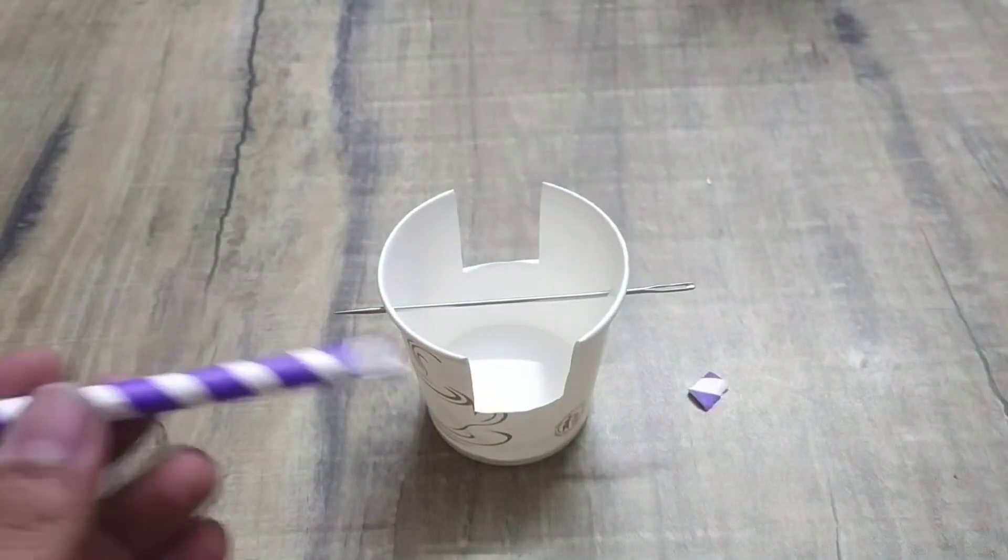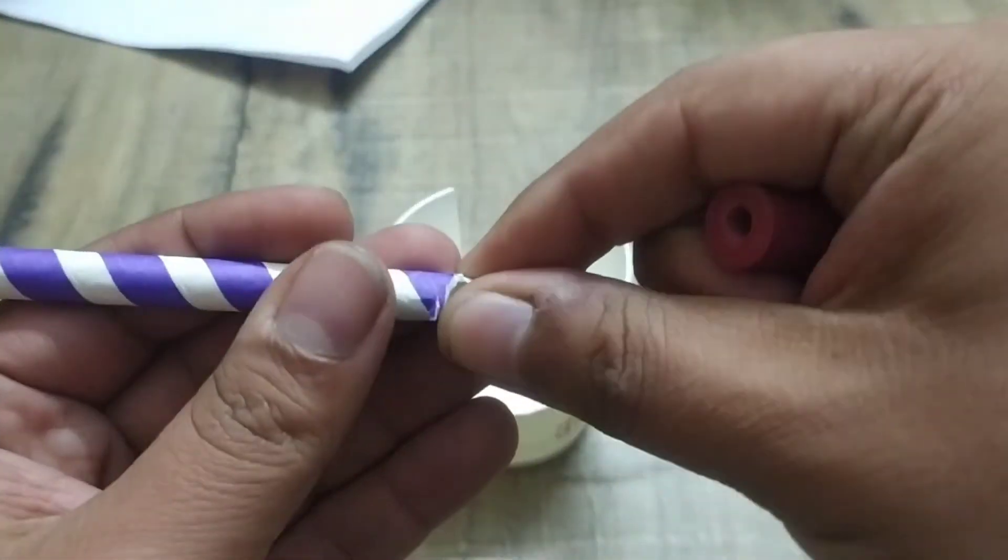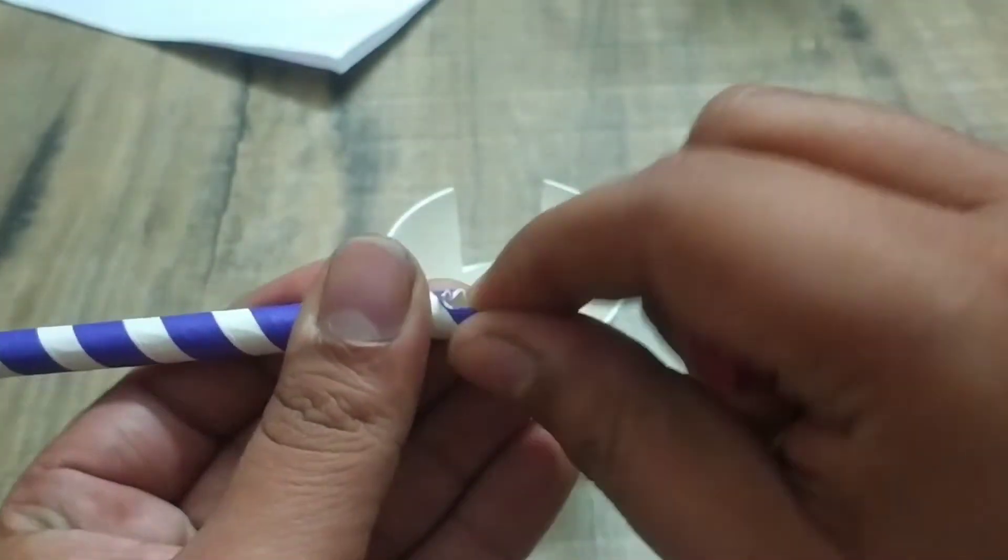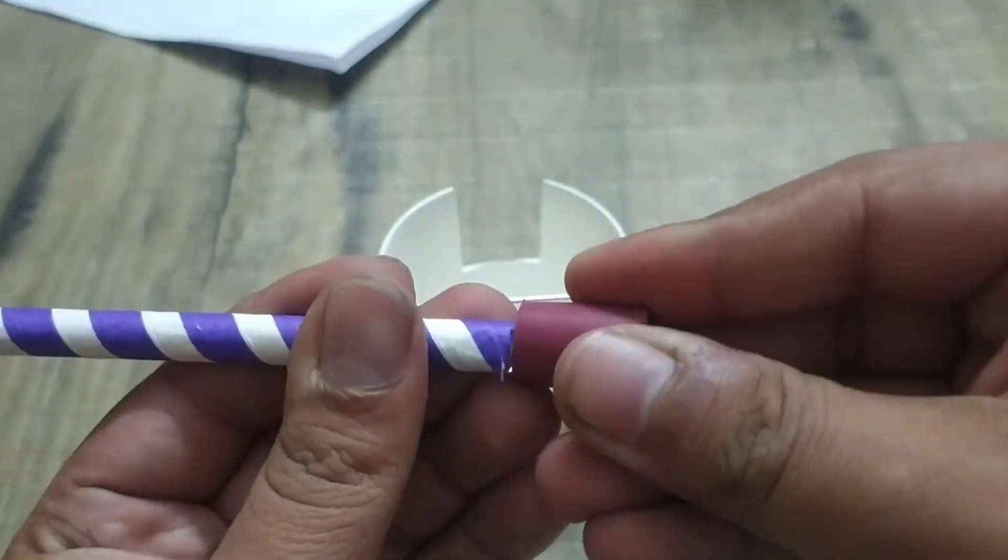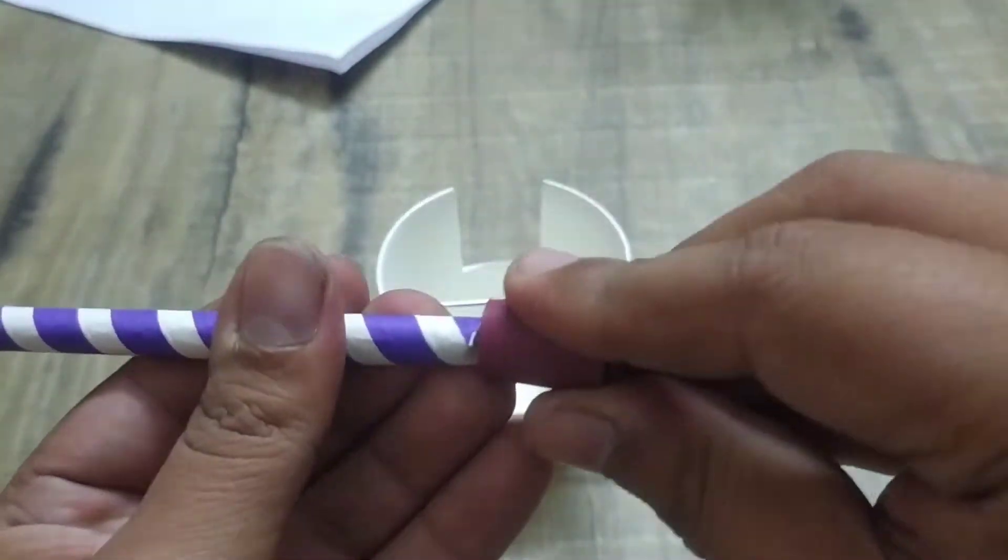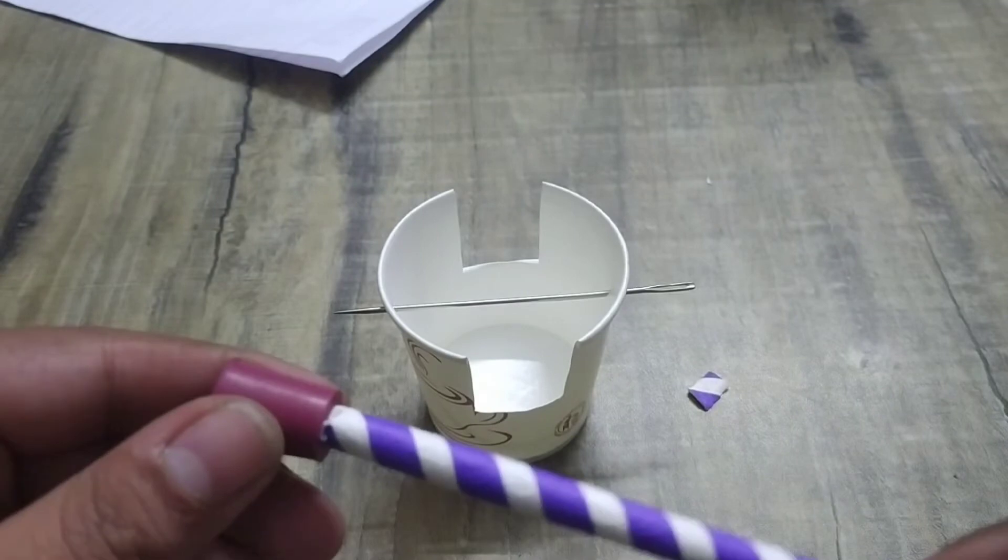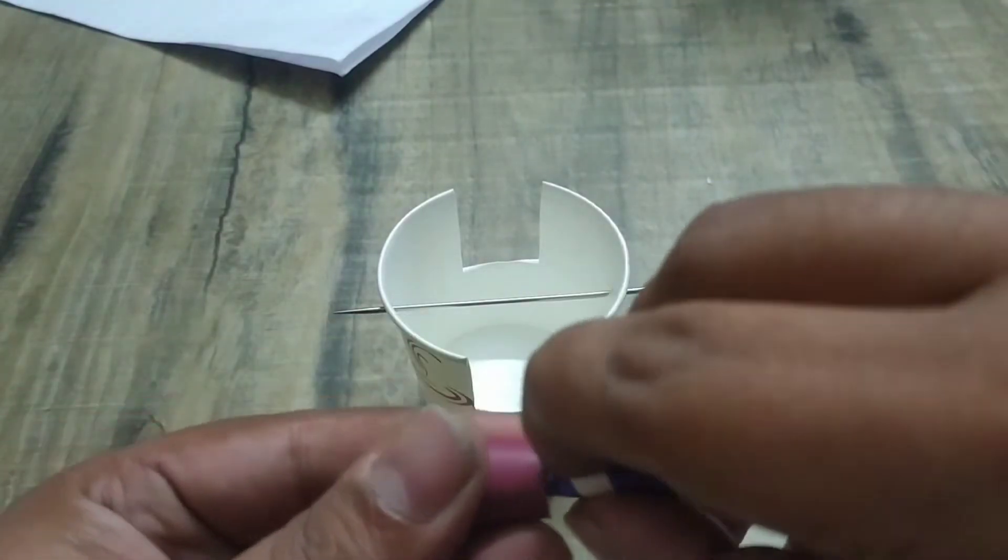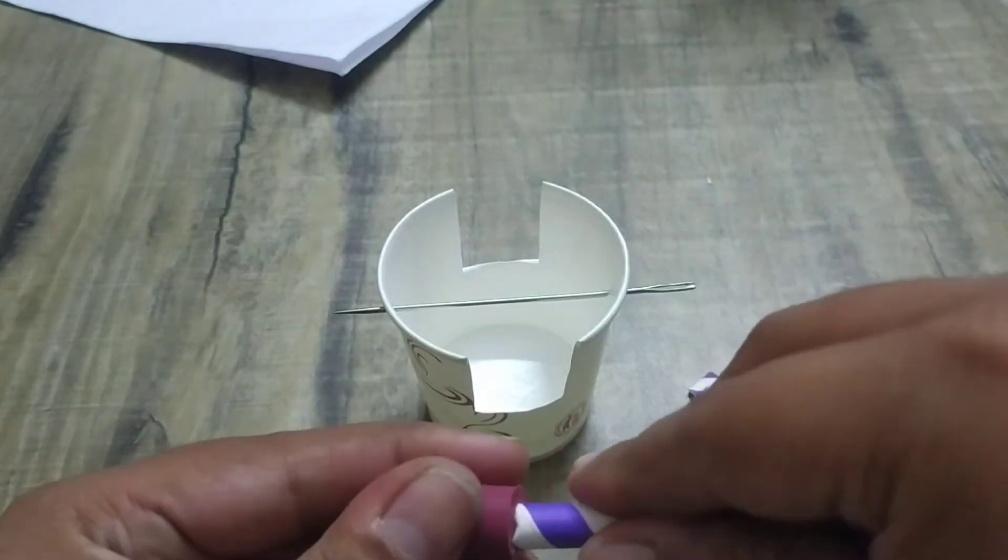Now take the straw and fit the eraser cap on the other end of straw. On the one end there is one little scoop and on the other end we have fitted the eraser cap.